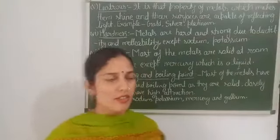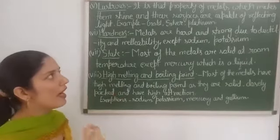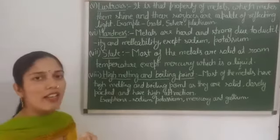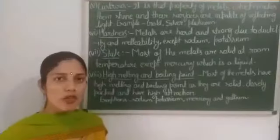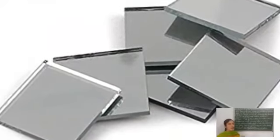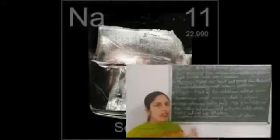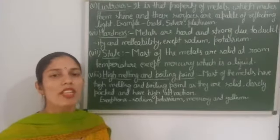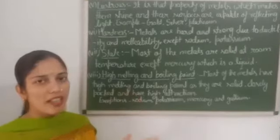The next property of metal is lustrous. Lustrous means it is that property of metal which makes them shine, and their surface is capable of reflecting light. Because of this property, jewelry is made with metals — for example, gold and silver have shiny surfaces. Also, because of the reflecting power of silver, it is used in mirrors. The surface of metal is shiny when fresh, but after some time an oxide layer forms and they become dull. When we rub them with sandpaper they become shiny again. Examples are gold, silver, and platinum.